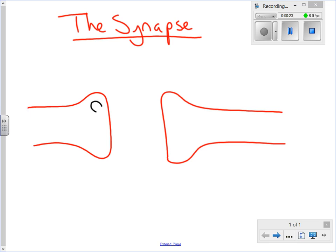At each synapse before the gap there are little sacs inside the neuron that contain a chemical.